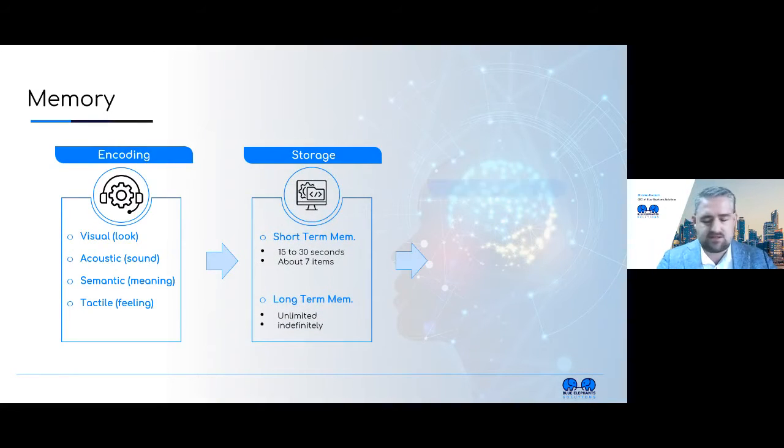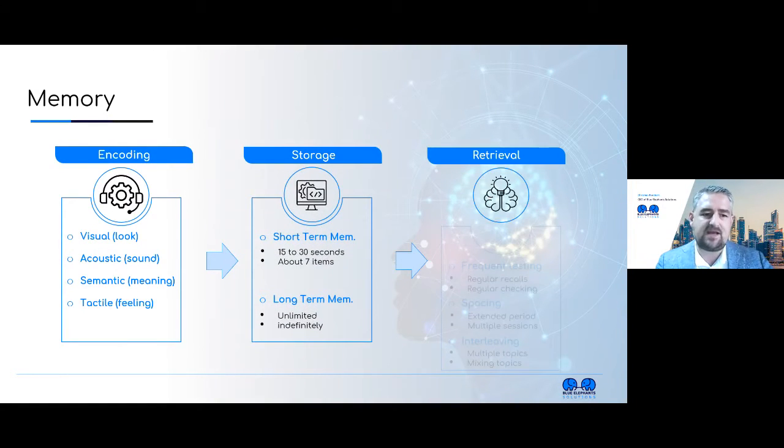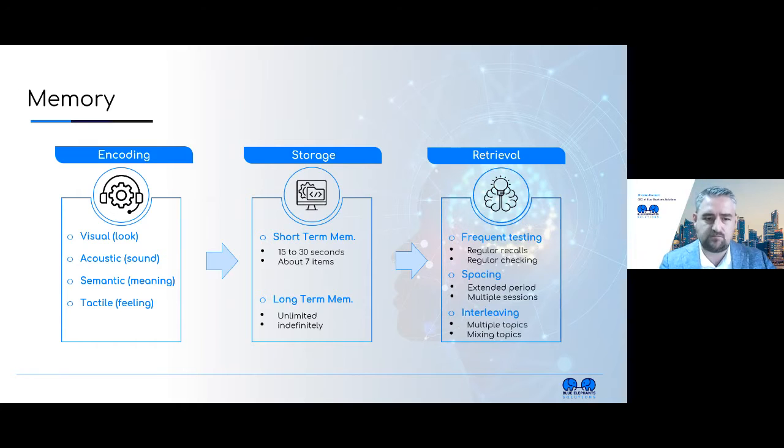Memory consists mainly of three areas: encoding, which is how you perceive the information and put it into your head; storage, what is happening in your head; and the retrieval phase of this information when you need to have it ready.